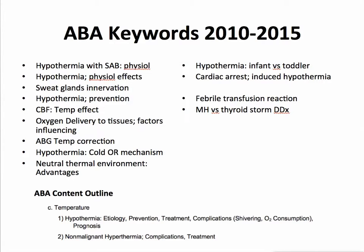Oxygen delivery to the tissues: if you're cold, your oxyhemoglobin curve will shift to the left, and you hold on to oxygen more and don't deliver it as well to the tissues. What happens to your blood gases — we'll talk about that when you're cold. What can you do in the operating room to prevent patients from getting cold? Radiant heat loss is number one, and if you warm the room that's something you can do to prevent heat loss, creating a neutral thermal environment.